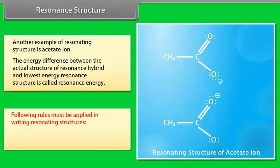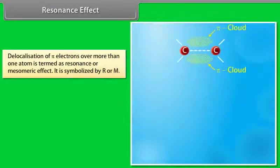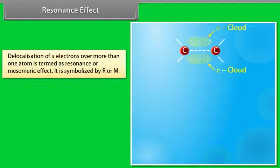Rules for writing resonating structures include: the same positions of nuclei and the same number of unpaired electrons must be maintained. The resonance or mesomeric effect refers to the delocalization of pi electrons over more than one atom — symbolized by capital R or capital M.